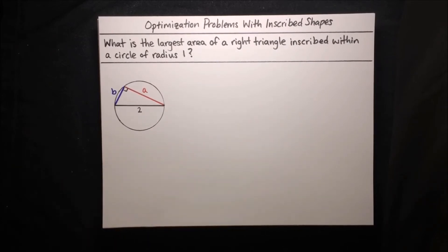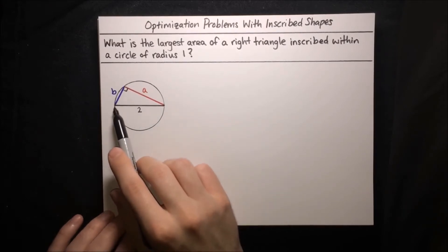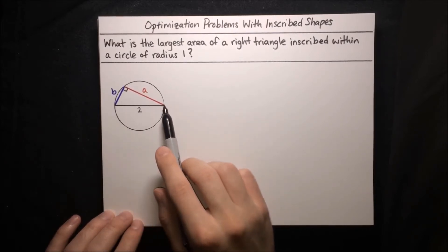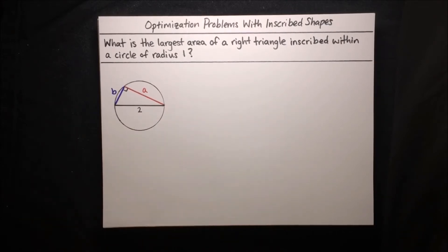Remember that any right triangle in a circle has its hypotenuse as a diameter of the circle, so our diagram is general. No matter how we fit this right triangle in the circle, its hypotenuse will span a diameter of the circle, and since the circle has radius 1, the diameter has to be length 2.